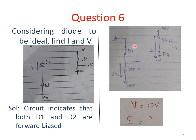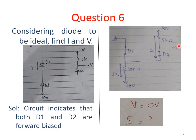Now D1 is a short circuit and D2 is a short circuit. This 0 volt appears on this terminal — there is no component here — so 0 volt goes around here, 0 volt goes around here, 0V here. This is the value of V. The value of V is 0.